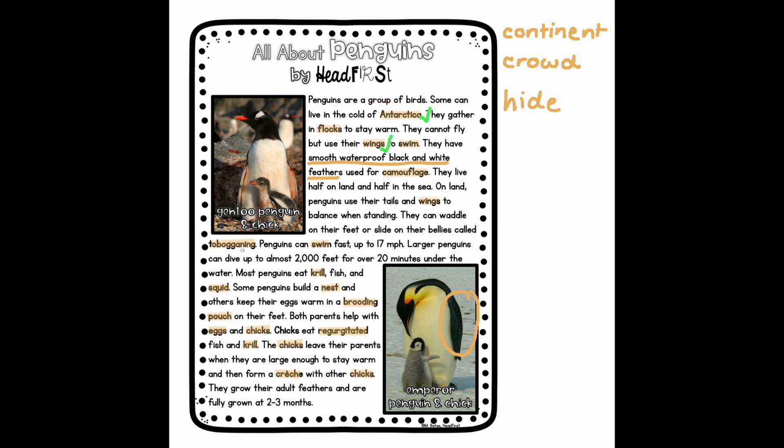Next, we have this rather unfamiliar word called toboganing. If we look earlier in the sentence, we are actually given an example — it says that the penguins can waddle on their feet or slide on their bellies. Because we know that the penguins can slide on their bellies, this is referred to as toboganing. So we know what toboganing means, and we can check it off.